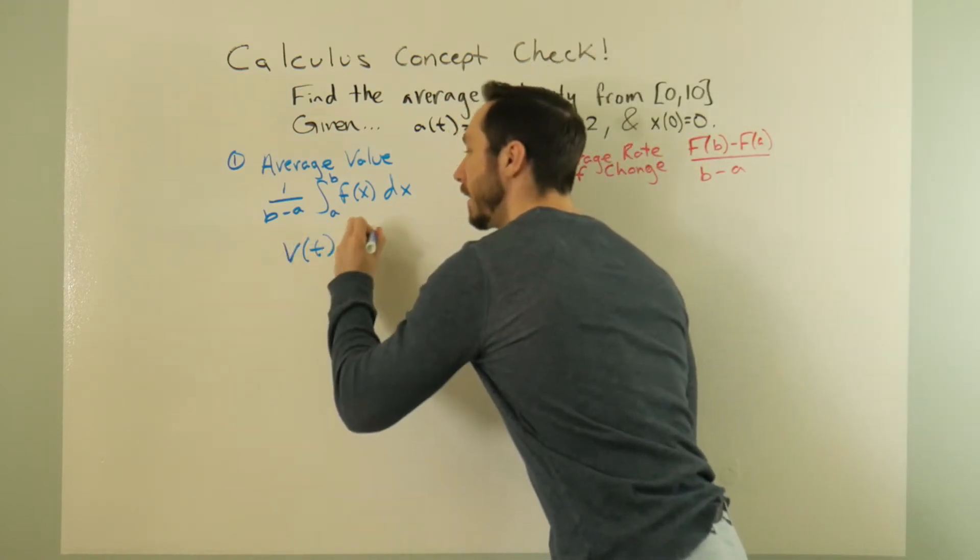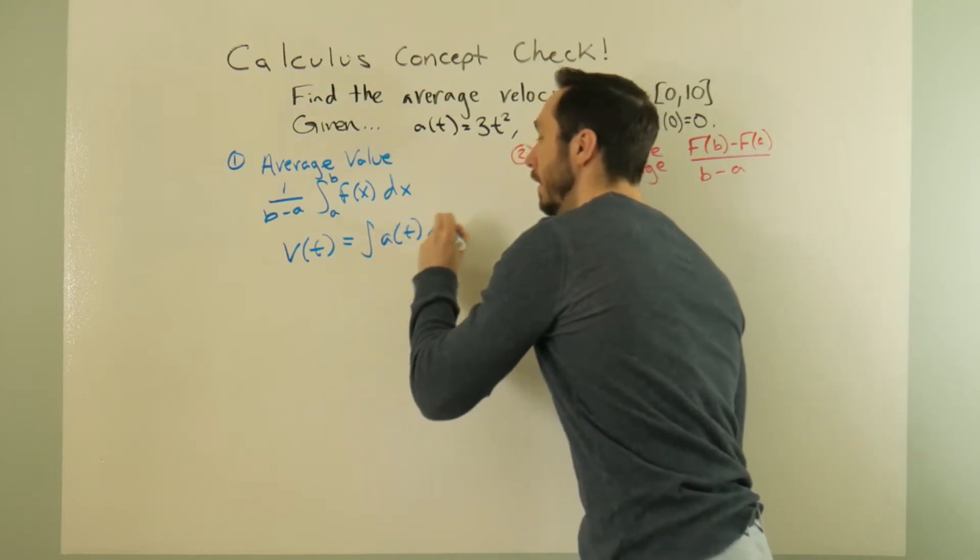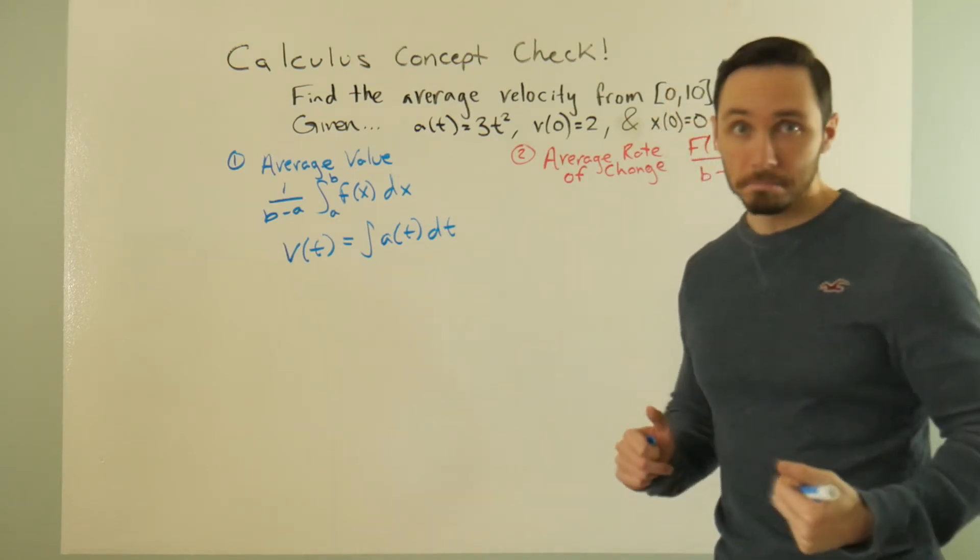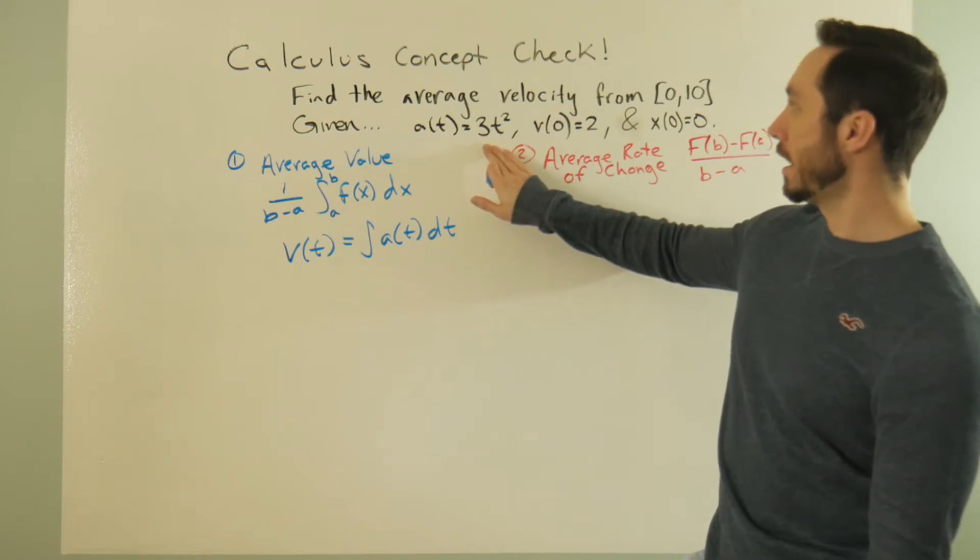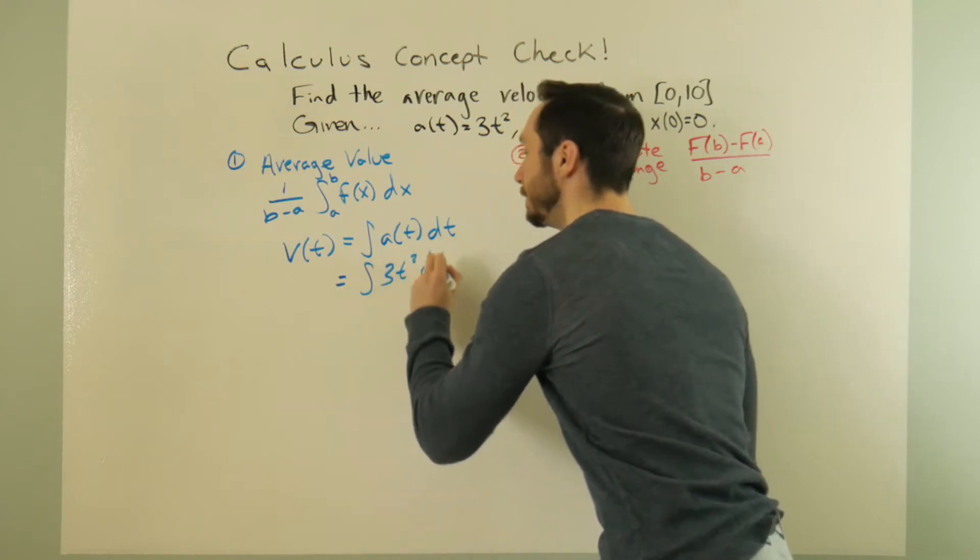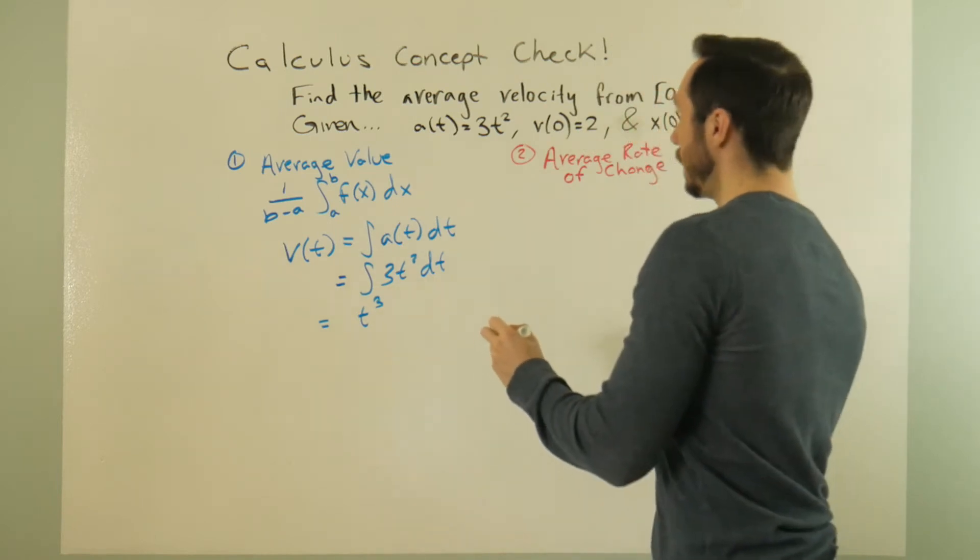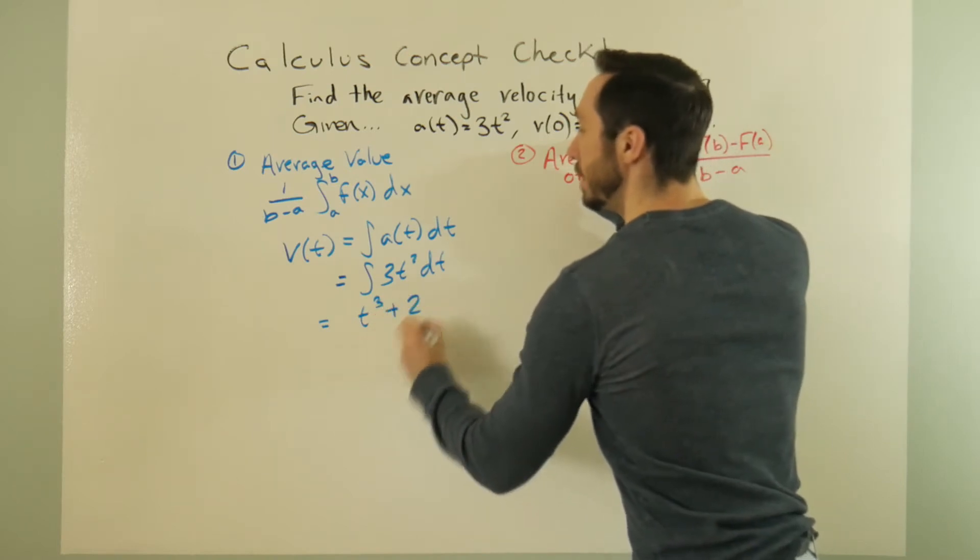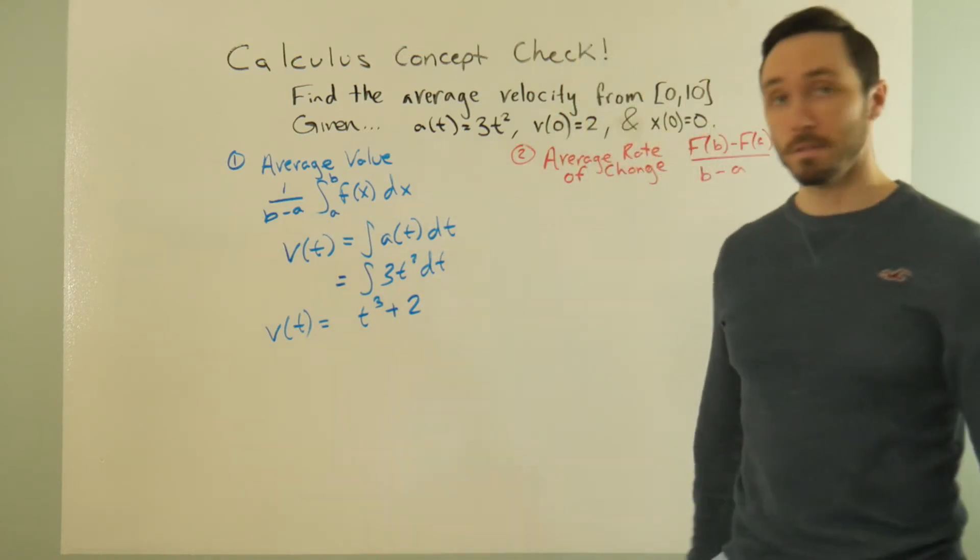the velocity function is the integral of the acceleration function. Okay, and acceleration is the derivative of velocity. Two-way street. So if I know my acceleration function, what I can do is I can say this is the integral of 3t squared dt. All right, this is t cubed. Well, I have some sort of constant, right? But we are provided that constant. It's equal to 2. So my c value would be 2 in this case. I know that my velocity function can be represented as t cubed plus 2.